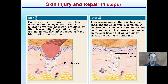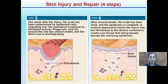After about a week, the scab has been undermined by epithelial cells migrating over the meshwork produced by fibroblast activity. The scab is still located at the surface, phagocytotic activity is almost ended, and the fibrin clot is being disintegrated. A lot is happening below the surface in the dermal layer — this is why picking off a scab re-causes injury and doesn't allow a sealed environment, potentially causing longer wound healing time. Let the scab naturally fall off, as the body is working from the deeper dermal layer upward.